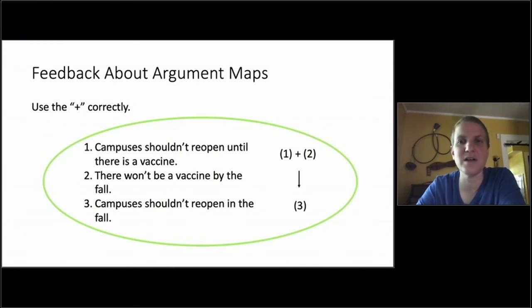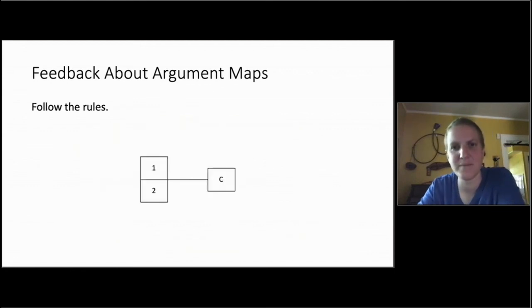Here's a case where the plus is used correctly. So here we have campuses shouldn't reopen until there's a vaccine and there won't be a vaccine by the fall. That's why campuses shouldn't reopen in the fall. Now you'll notice one by itself would not support three. Campuses shouldn't reopen until there's a vaccine. Well, you might think there will be a vaccine by now. You might have thought that when the article was written. And the fact that there won't be a vaccine by the fall wouldn't by itself support three, unless you're also claiming that campuses shouldn't reopen until there's a vaccine. So here this one is written correctly.